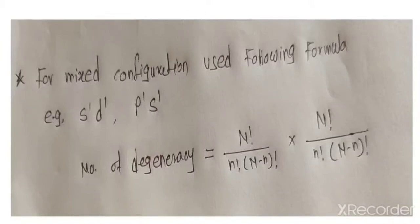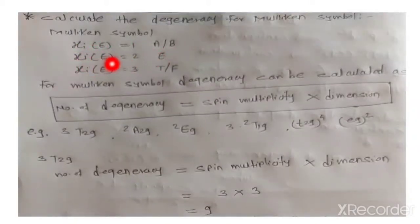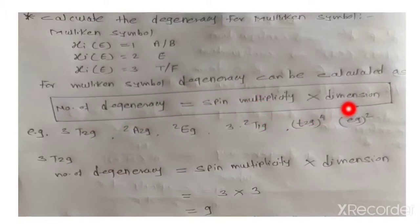Next, calculate the degeneracy for the Mulliken symbol. The Mulliken symbols are: A or B, where the dimension (χ) equals 1; E, where χ equals 2; and T, where χ equals 3. To calculate the degeneracy for the Mulliken symbol, the formula is: number of degeneracy equals spin multiplicity times dimension.